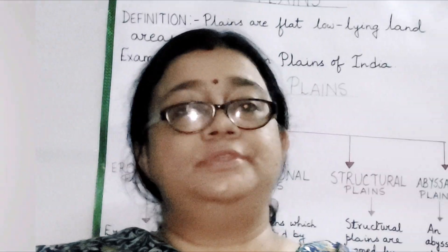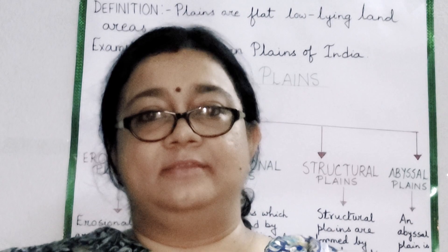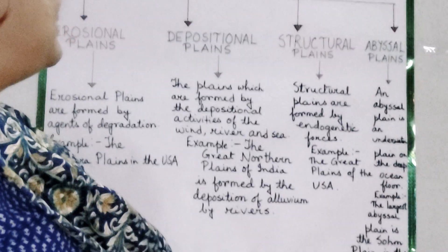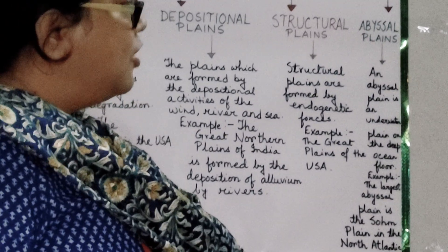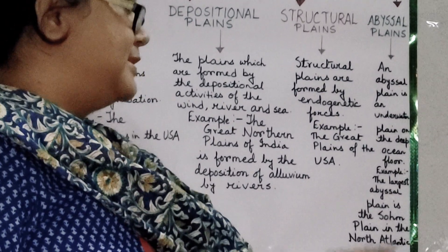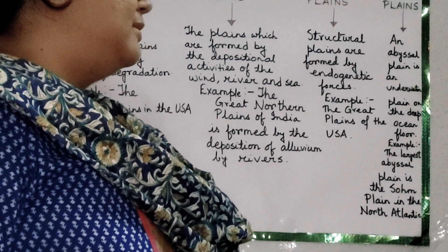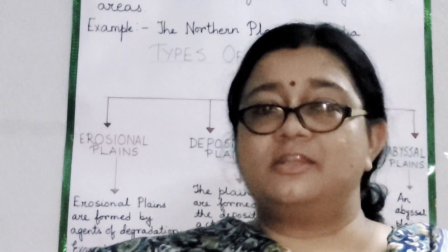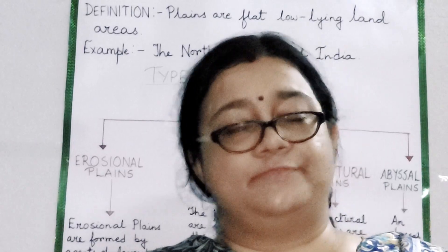The fourth type is the Abyssal Plain. An abyssal plain is an underwater plain on the deep ocean floor. For example, the largest abyssal plain is the Sohn Plain in the North Atlantic. An abyssal plain is a large, flat, sediment-covered area of the deep ocean floor.